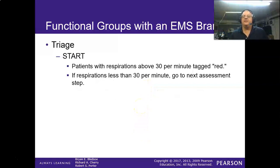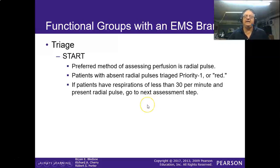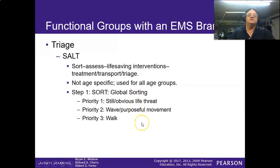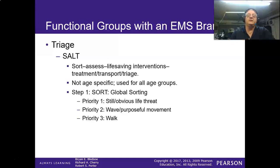The way I remember this is RPM. If the respiratory rate is over 30, it's red. If it's below 30, we go to the next assessment — the P. If they have a radial pulse, we go to the next one. If they don't have a radial pulse, we tag them red and keep going. The last one: ask the patient to grip both of your hands. If they can do that simple task but still can't move, they're yellow. If they cannot do that simple task, they're red. RPM stands for respirations, pulse — and also capillary refill. If capillary refill is greater than two seconds, that's another test under perfusion. And then mental status: 'can do / can't do.'